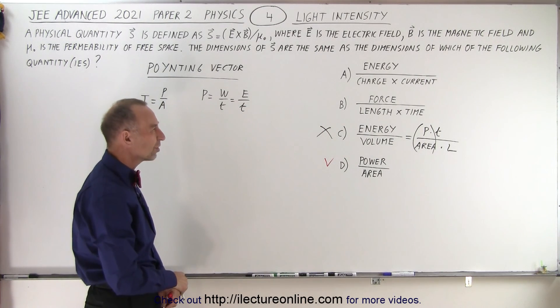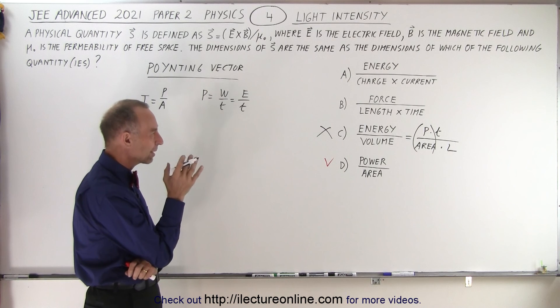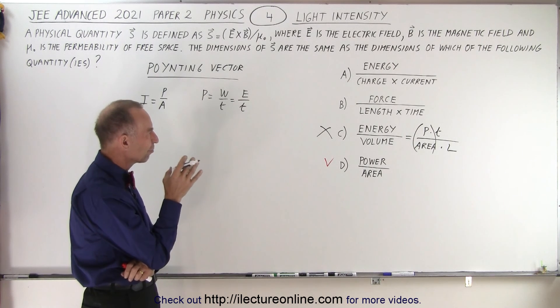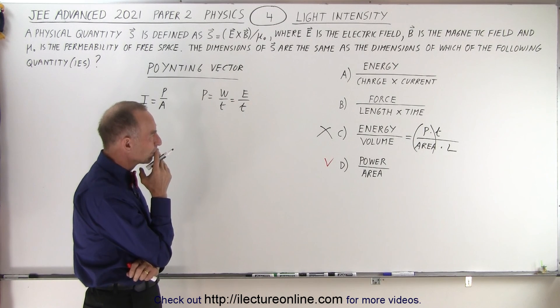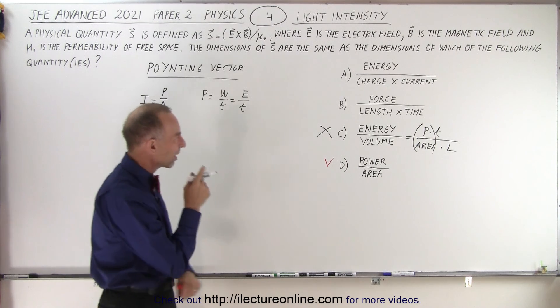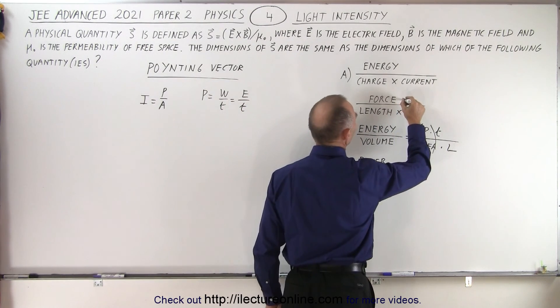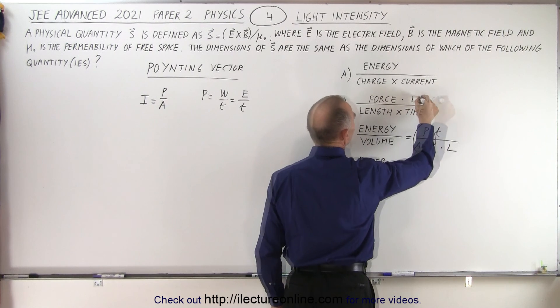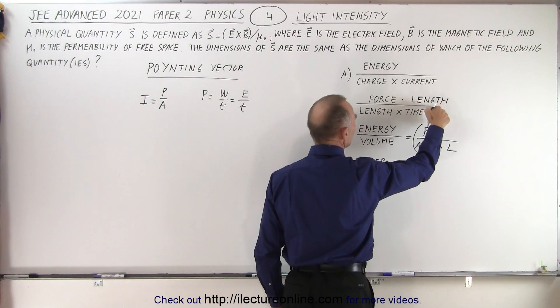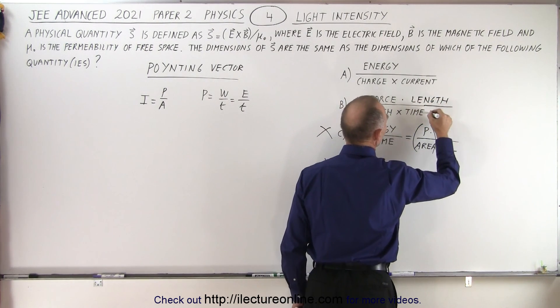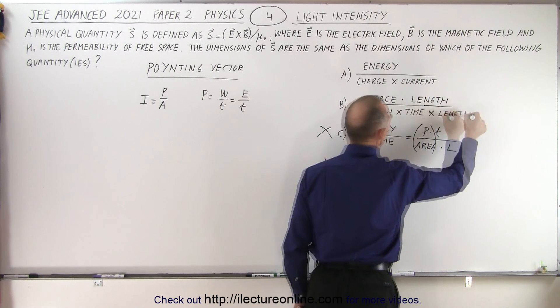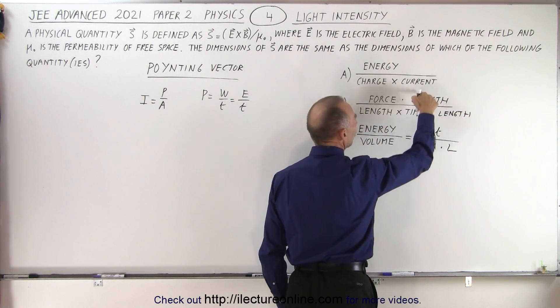How about B? Force times length times time. That looks like it might have something there. Force times distance. If I go force times length, if I multiply the numerator by length, I have to multiply the denominator times length as well. And now I have force times length over time.